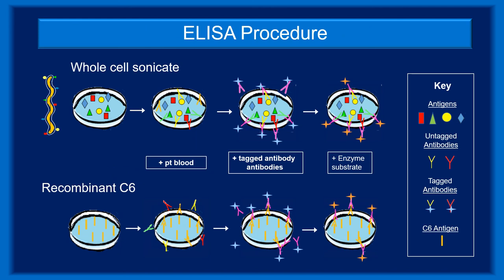Here's a look at the mechanics of ELISA testing, which measures antibody levels but generally does not identify which antibodies are present. The most common type is the whole-cell sonicate. Borrelia burgdorferi is broken into individual antigenic components, which are absorbed onto the test well. The patient specimen is added and allowed to incubate so that free antibodies bond with their matched antigens. The well is washed to remove unbound antibodies, and tagged anti-human antibodies are added and allowed to incubate. These secondary antibodies are conjugated to a substrate-specific enzyme. The substrate is converted by the enzyme to produce a color change read by a spectrophotometer.